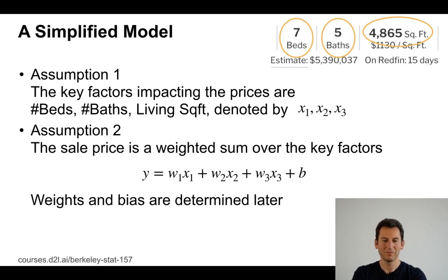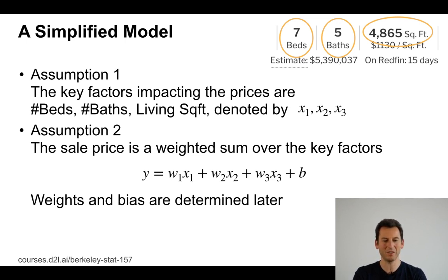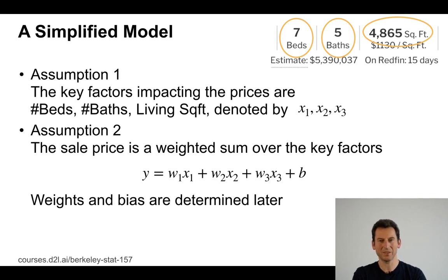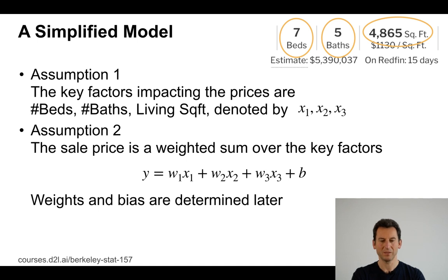Let's make a very simple model. The land, location, style, and so on all matter, but let's assume that the price depends on the number of bedrooms, number of bathrooms, and the living area — and let's call those variables x1, x2, and x3. Let's also assume that the sales price is actually a weighted sum over those key factors: w1 times x1 plus w2 times x2 plus w3 times x3 plus some bias b. Our goal is to determine those weights wi and the bias such that for a new unseen house, we'll estimate the price accurately.